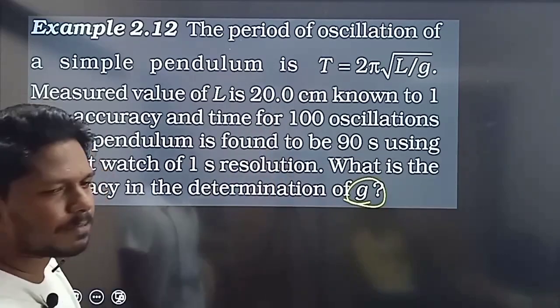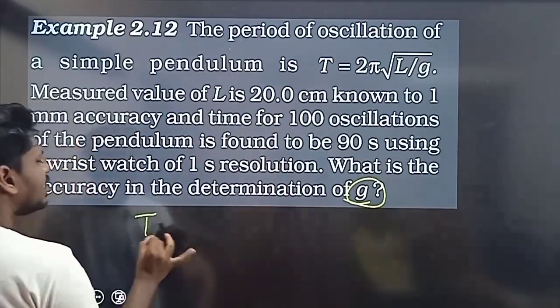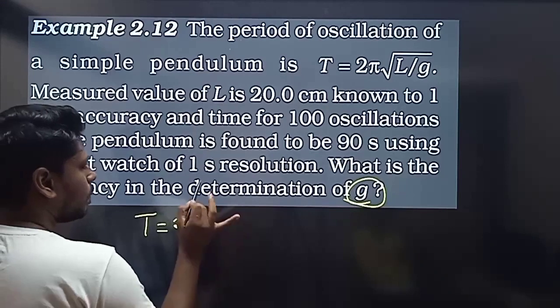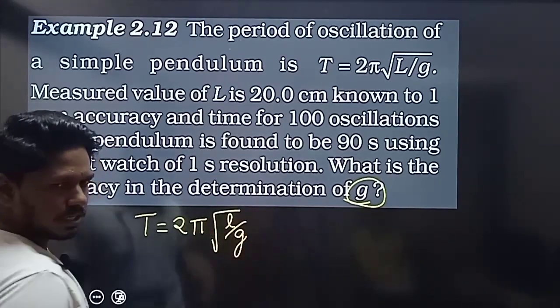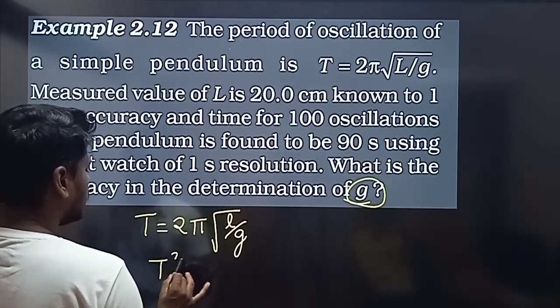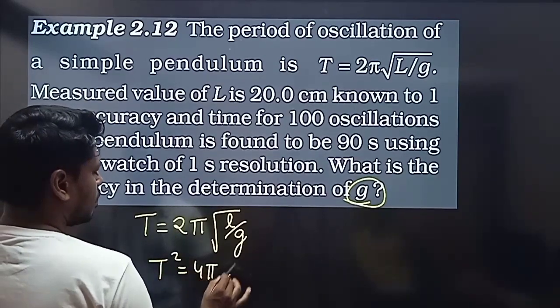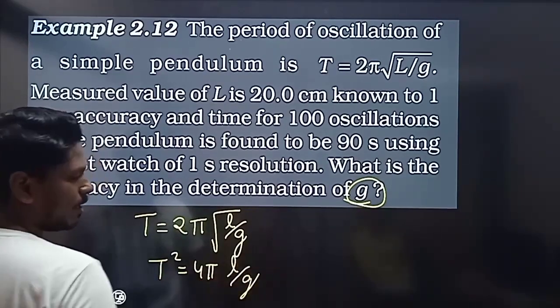First of all, starting with the formula: T equals 2π root of L by g. T squared, what is it? 4π² L by g.